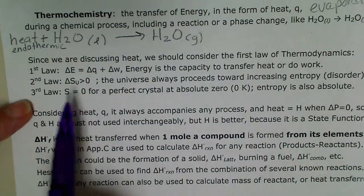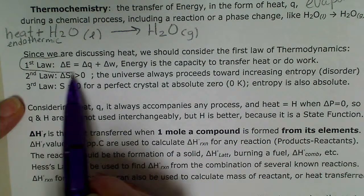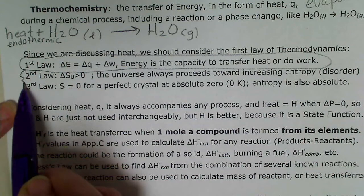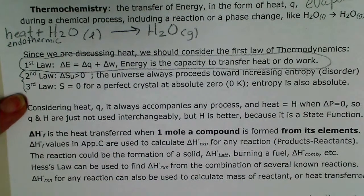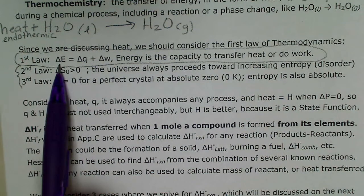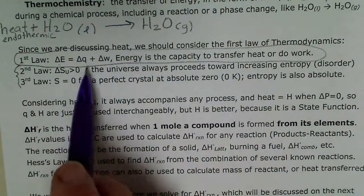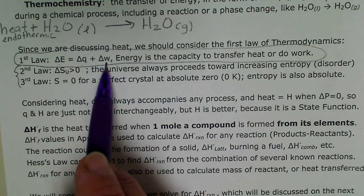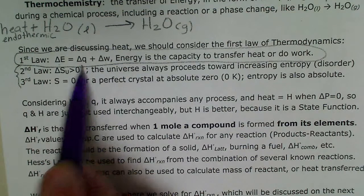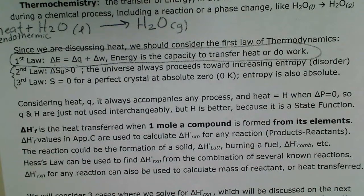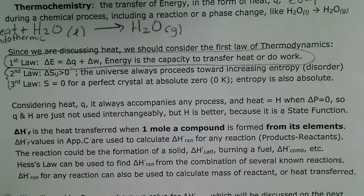Our chapter starts out with the first law of thermodynamics. I've given us all three laws, but the next two we'll see next semester in General Chemistry 2. The first law of thermodynamics can be written mathematically as the change in internal energy equals the change in work (W) plus the change in heat (Q). Energy can be defined as the capacity to transfer heat or to do work.